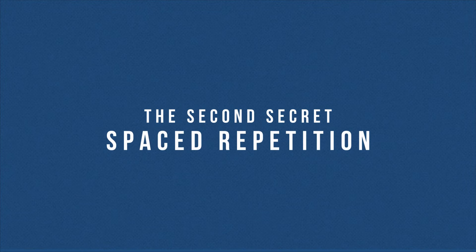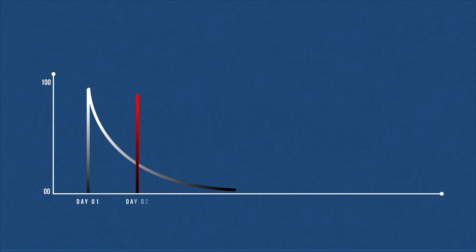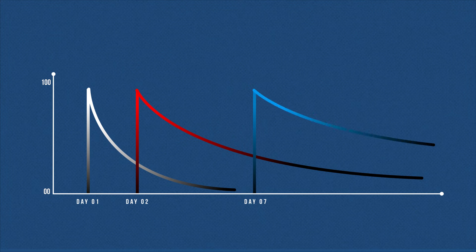The second secret to a prolonged memory is spaced repetition. When you review the same chapter on the second day, the gradient of the forgetting curve flattens a bit. When you review it again on the seventh day, the slope flattens even further. This pattern of spaced revision is called spaced repetition.